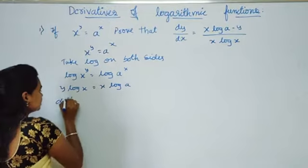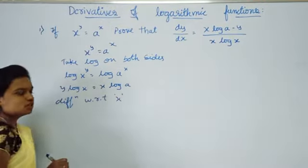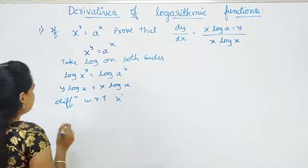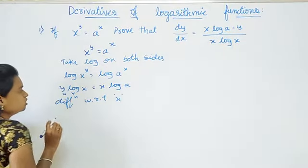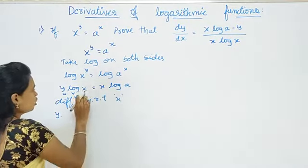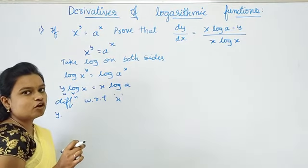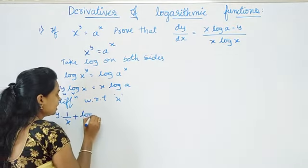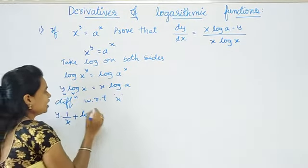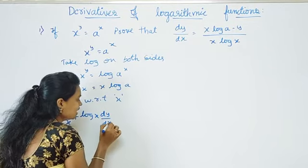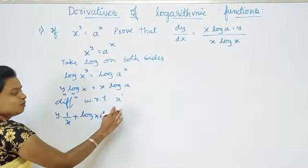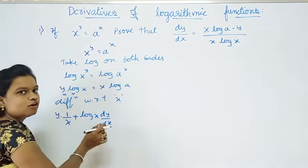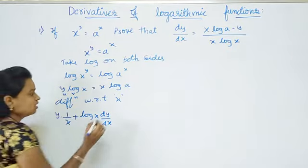Now differentiate with respect to x. On the left side we have y log x, which involves two functions, so we apply the product rule. The product rule gives: first function into differentiation of second, plus second function into differentiation of first. So that is y into 1 by x, plus log x into dy by dx.